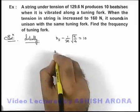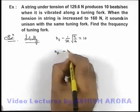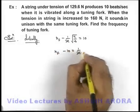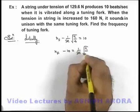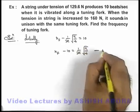That means initially the frequency of string is lower than that of tuning fork. So in this situation we are getting frequency of fork minus 10 is equal to 1 by 2L root of T1 by μ. Say this is our equation 2.